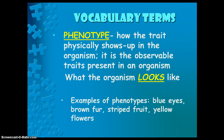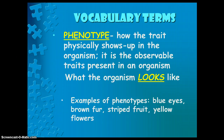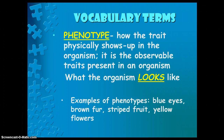A phenotype is how the trait physically shows up in the organism — the observable traits present in an organism, what the organism looks like. Examples of phenotypes are blue eyes, brown fur, striped fruit, and yellow flowers. When we talk about a phenotype, we're talking about what we can see. A helpful mnemonic: phenotype starts with 'ph,' and so does 'physical appearance' — phenotype equals physical appearance.